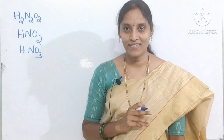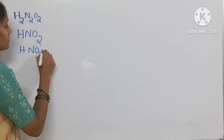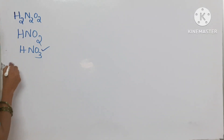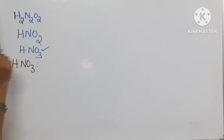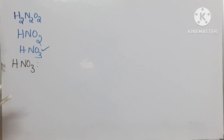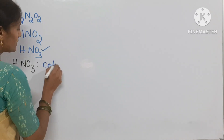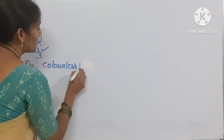Among these three, the last one — nitric acid — is the most important one. Now we are going to discuss about nitric acid, HNO3. HNO3 is the nitric acid and it is a colorless liquid.